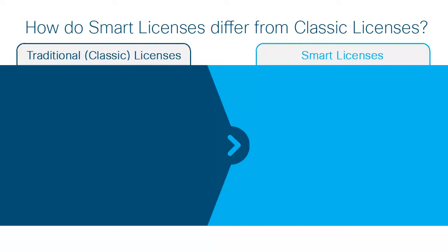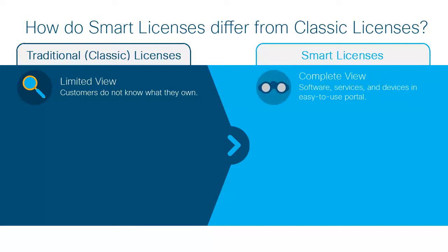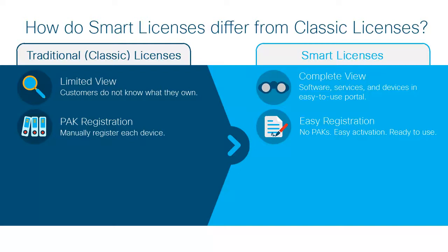First, with traditional licenses, customers have a limited view of the licenses they own, whereas with smart licenses, customers and partners have a complete view of all their licenses and devices. To view your licenses, you will go to software.cisco.com. Second, traditional licenses require manual registration through product activation keys, or PACs, where users have to go to a website and register each license for each product individually. Smart licenses don't require PACs, and once they are assigned to a smart account, the products self-register, allowing for easy activation.